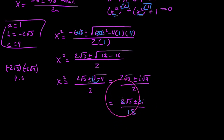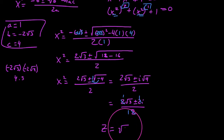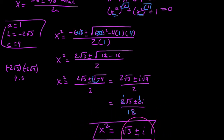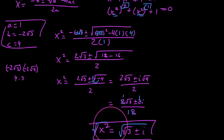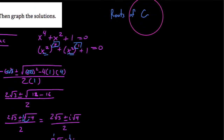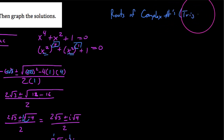All of these 2s can be reduced by a factor of 2, so we end up with x² equals √3 plus or minus i. Now, in order to solve this, we have to take the square root of both sides. When you have to take the square root of a complex number, it is impossible to do it in standard form. So when you take roots of complex numbers, we want to do this in trig form.